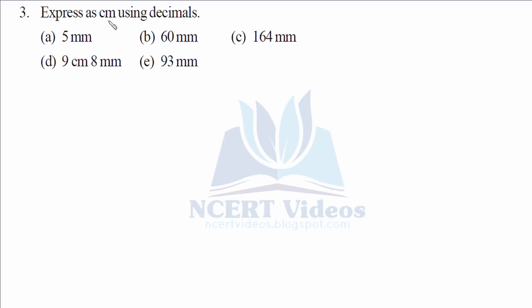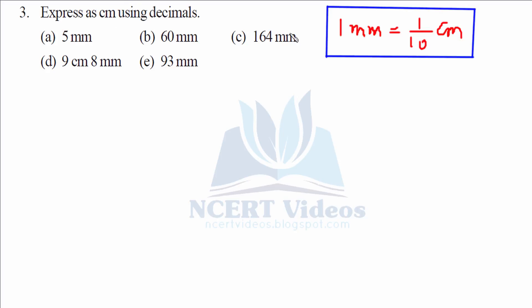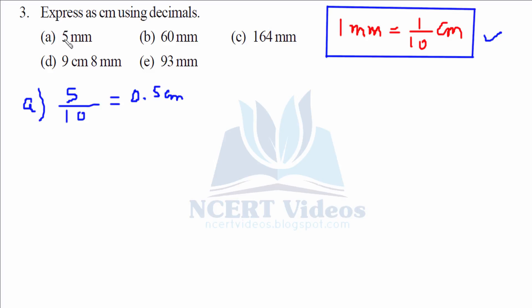Now we have to convert millimeters into centimeters. The conversion factor here is 1 mm equals 1 over 10 centimeters. Therefore, for part a, 5 over 10 is nothing but 0.5 centimeters.